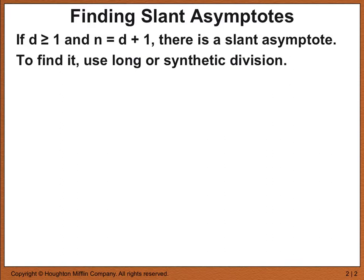When you're going to find a slant asymptote, first of all, you have to identify whether the function has a slant asymptote or not. And then, once you identify that it does, to find it, you use long or synthetic division.